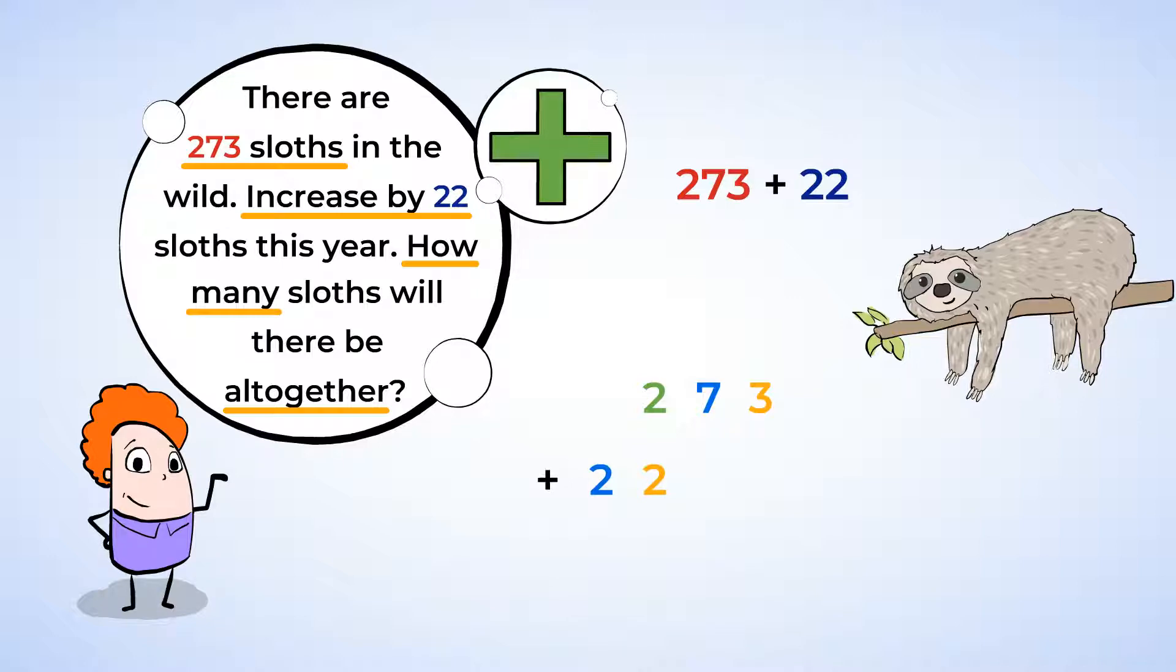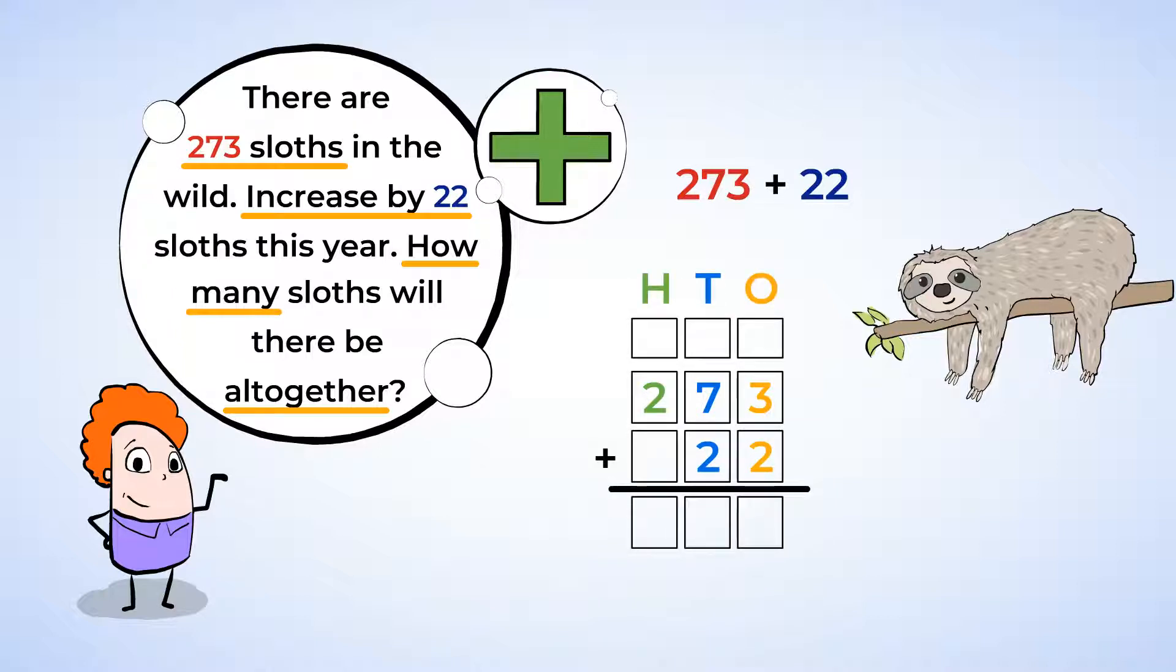Whenever we are adding, we need to make sure to align the numbers correctly so that we add the hundreds with hundreds, tens with tens, and ones with ones. Now, the hundreds, tens, and ones places are each aligned. For example, you can see that the 3 and the 2 are aligned in the ones place.